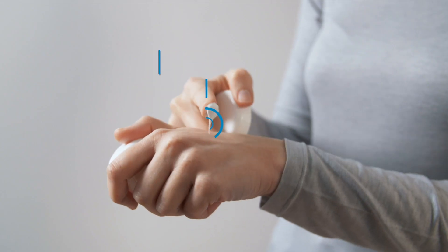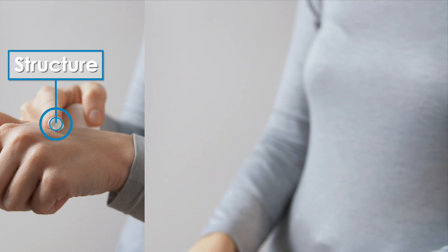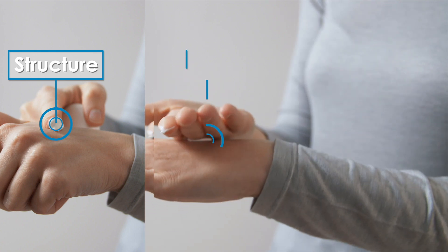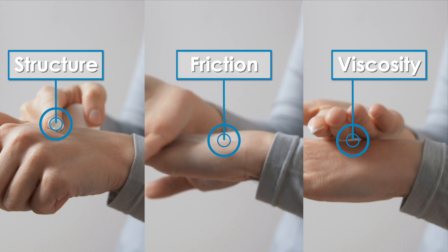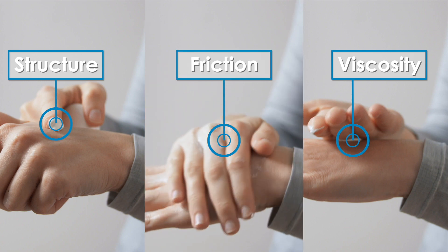Breaking down spreadability into three distinct time points helps us think about the physical processes at play that we can objectively quantify using combinations of rheological and tribological techniques.